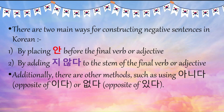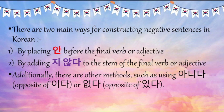Now, basically, there are two main ways for constructing negative sentences in Korean. The first one is by placing 'an' before the final verb or adjective in the sentence. And the second way is by adding 'ji antha' to the stem of the final verb or adjective. So, these are the two main ways for making negative sentences in Korean.